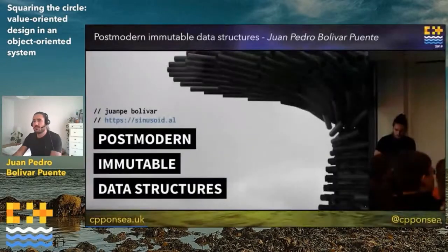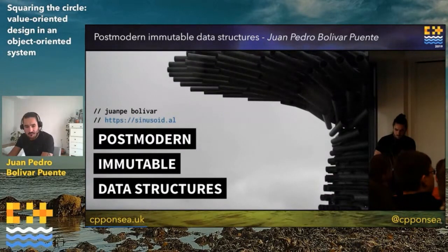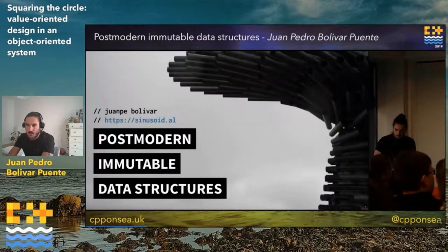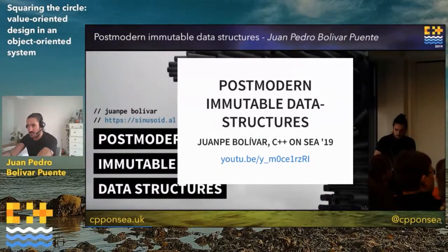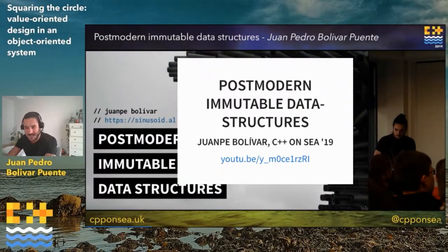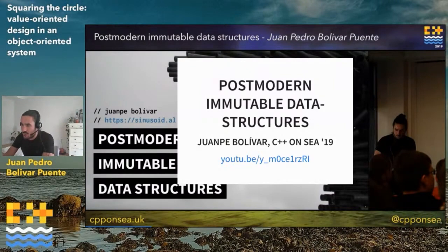As a C++ developer, you may be thinking that way of programming is very inefficient because you're copying all the data all the time — maps and vectors that are slow to copy. However, that doesn't need to be the case if you use data structures that are actually designed to be used in a value-oriented way. I've done quite a few talks on this topic. There is a talk called 'Postmodern Immutable Data Structures' that I gave last year at the same conference. I'm going to assume through this talk that passing things by value is efficient.